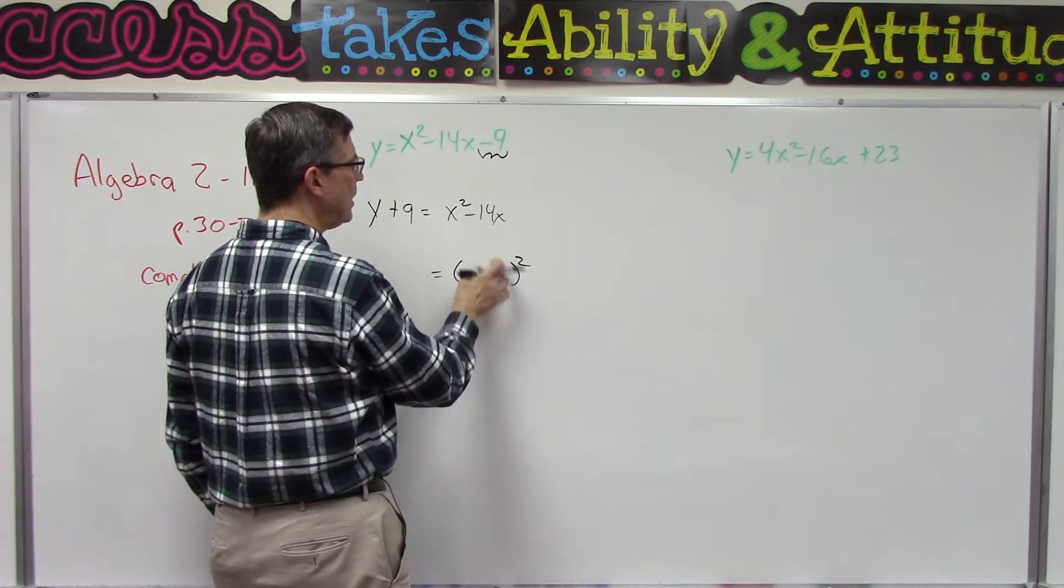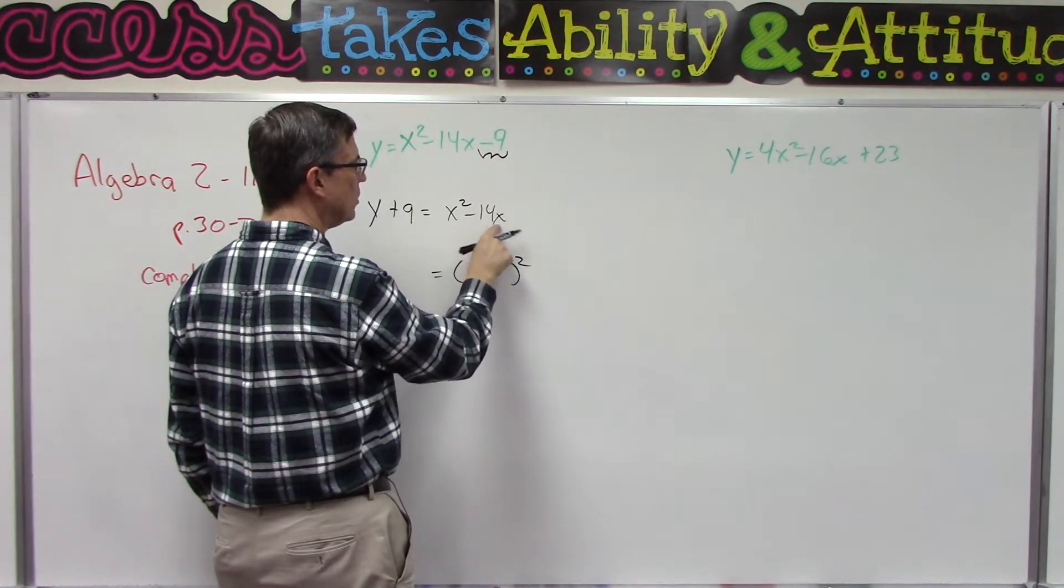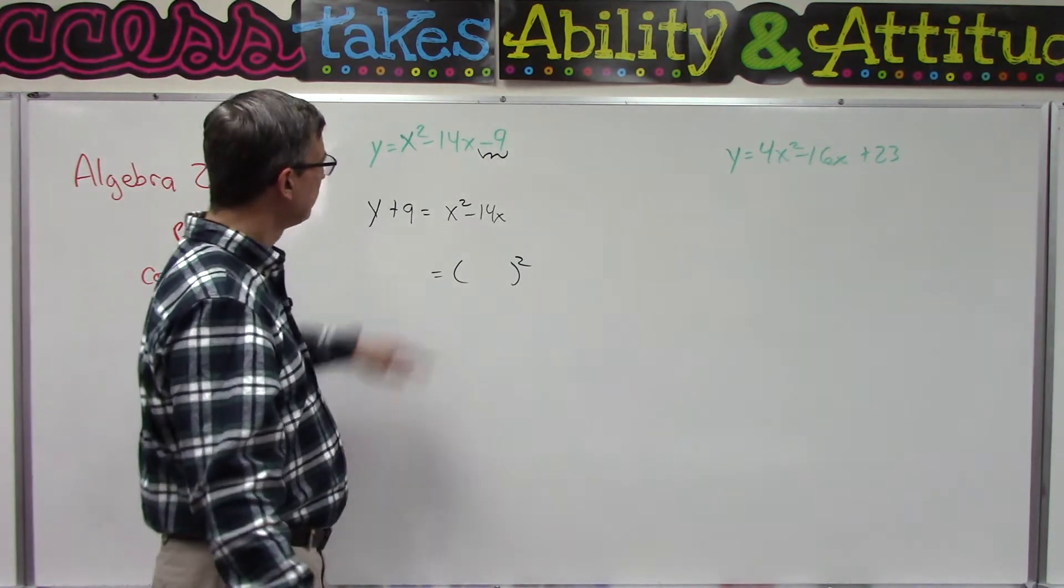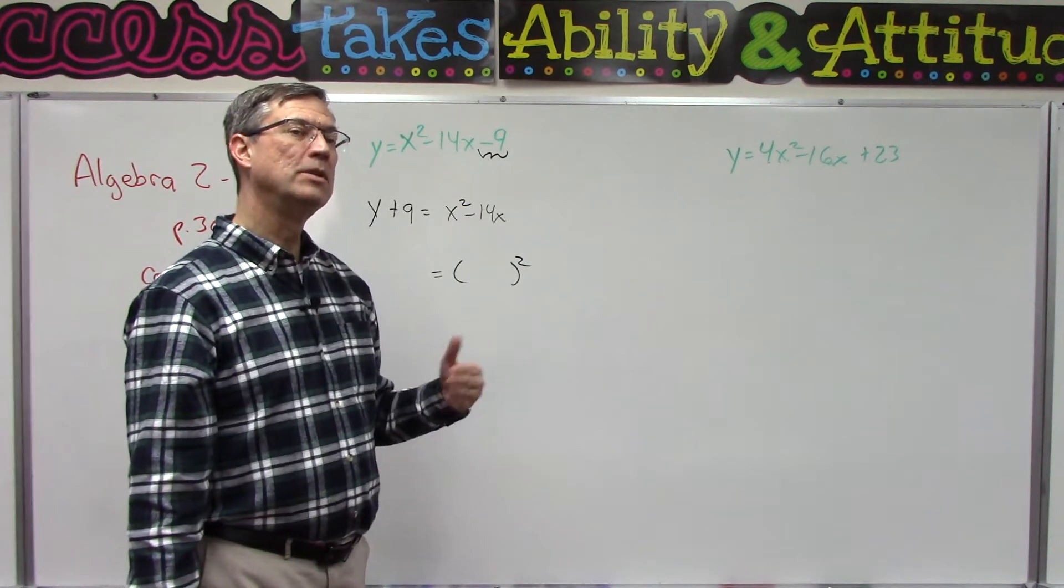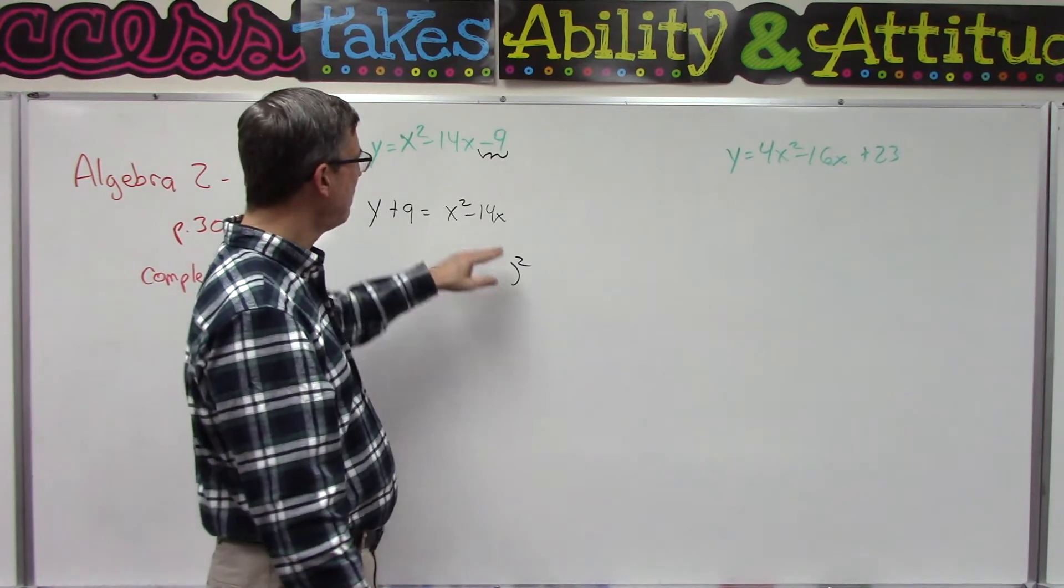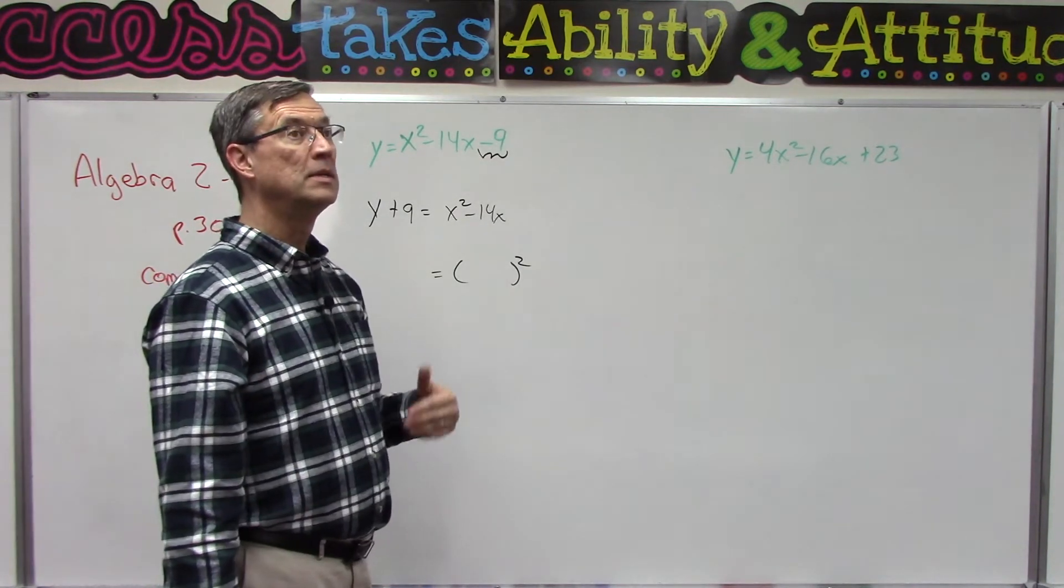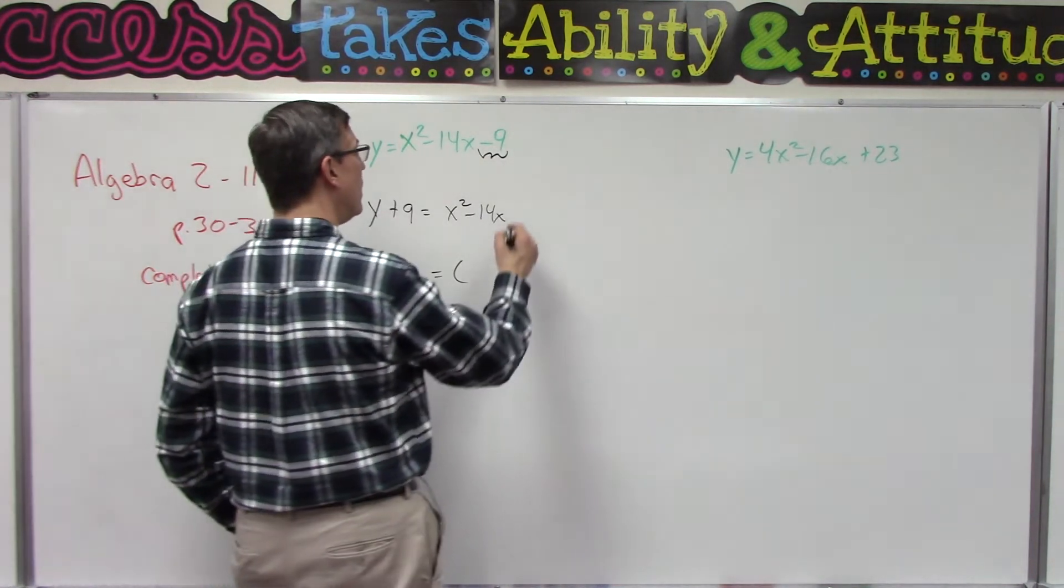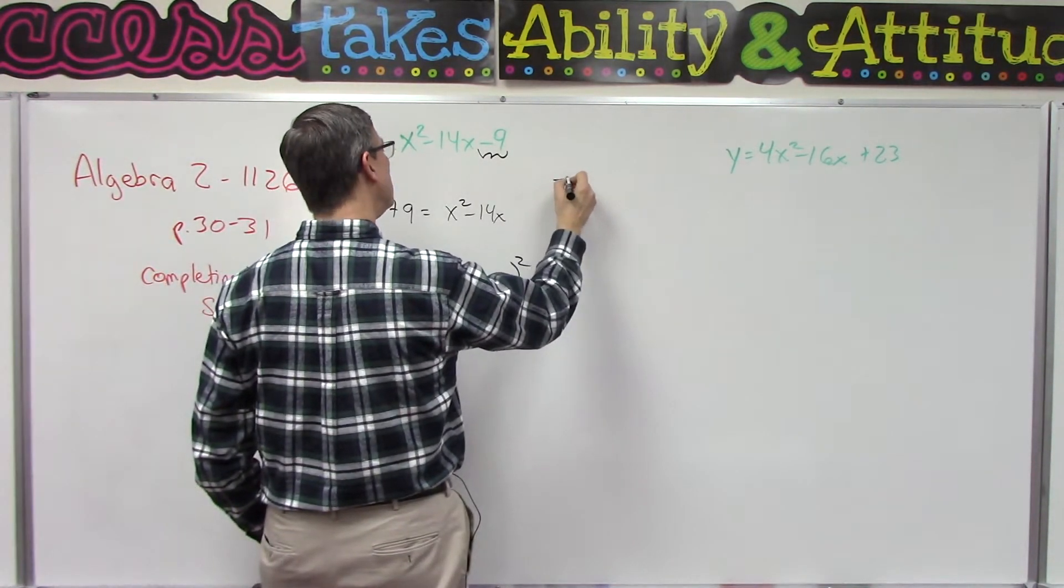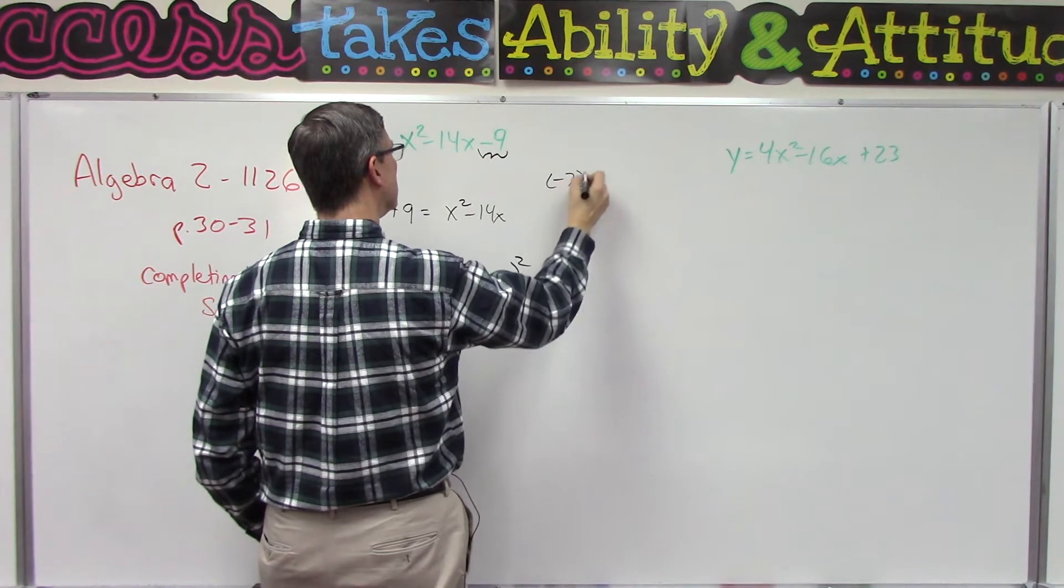The way we do that is we take half of this x term—I call that the middle term—half the middle term, and then we're going to take that number and square it. So half of 14 is 7, right? So we're going to square the 7. Actually, we should say that it's negative 7, but we're going to square it, so that gives us 49.